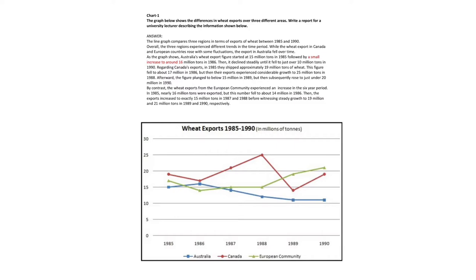As the graph shows, Australia's wheat export figure started at 15 million tonnes in 1985, followed by a small increase to around 16 million tonnes in 1986. Then it declined steadily until it fell to just over 10 million tonnes in 1990.